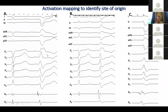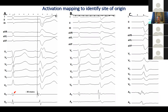The first case illustrates a phenomenon that you don't always see, but when you see it, it's helpful. Here is a sinus rhythm QRS complex and then the clinical arrhythmia. During the sinus rhythm QRS complex, you see this late potential, which reverses itself during the actual clinical arrhythmia. You can see it precedes the QRS complex for about 30 milliseconds.